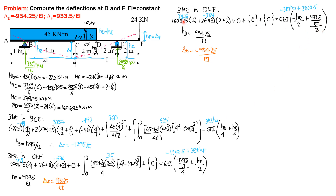Computing: 321.75 minus 384, with negative 6EI times negative HD over 2 giving negative 3EI·HD, and 6 times 933.5 over 2 equals 2800.5. Solving for HD gives HD equal to negative 954.25 over EI. Since HD also equals delta D, the deflection at D is negative 954.25 over EI.